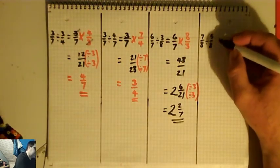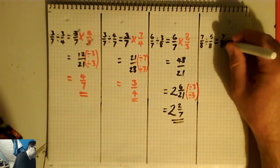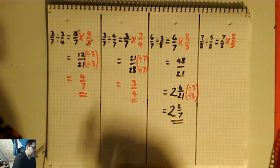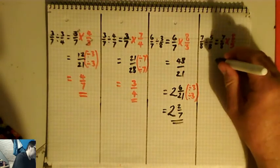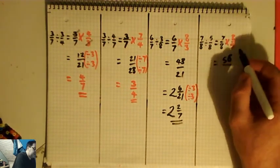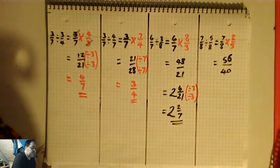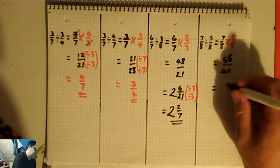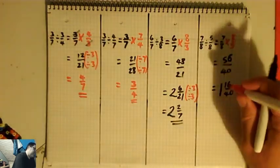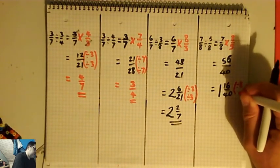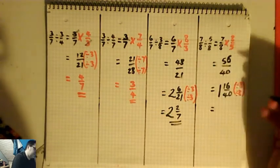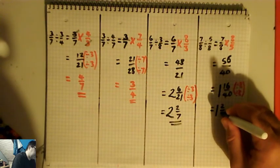The last one: seven-eighths divided by five-eighths is the same as seven-eighths times eight over five — change it to times, flip the second one over. Again, I can see the eights are going to cancel, but I'll do it the long way. Seven times eight on the top is fifty-six, eight times five on the bottom is forty. So that's fifty-six fortieths. How many fortieths can I get out of fifty-six? The answer is one with sixteen left over, so that's one and sixteen fortieths. There's a common factor of eight, so I reduce the fraction by dividing by eight over eight — which is just dividing by one — giving one and two-fifths.